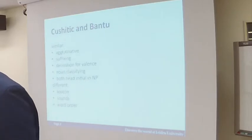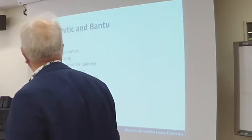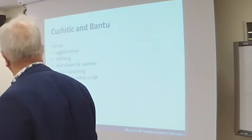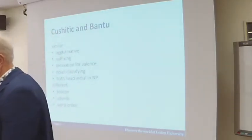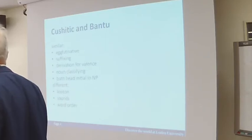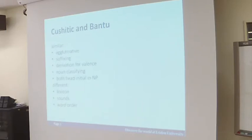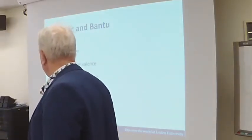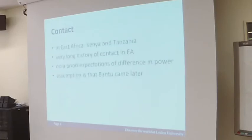I don't need to spend much time on this. I guess people here in the room know about Bantu — it's very agglutinative, a lot of suffixing derivation, noun classifiers. Both language groups share rough characteristics. They are in contact in Kenya and Tanzania with a very long history of contact. There are no a priori expectations of difference in power — at the moment Swahili is dominant in East Africa, but during the centuries, if the Bantu came later than the Cushitic people, we can't assume Bantu must have been in a stronger political position, nor the other way around.